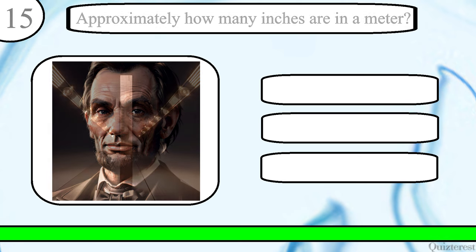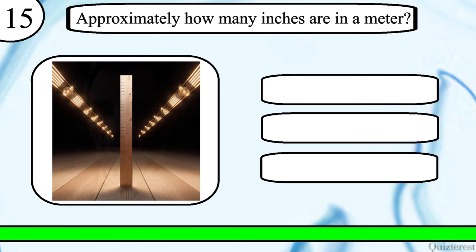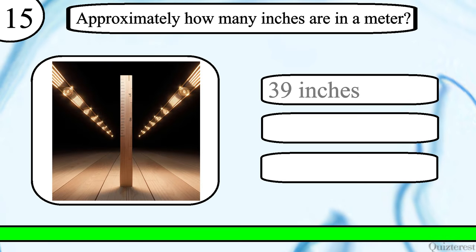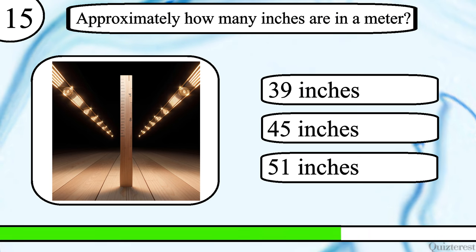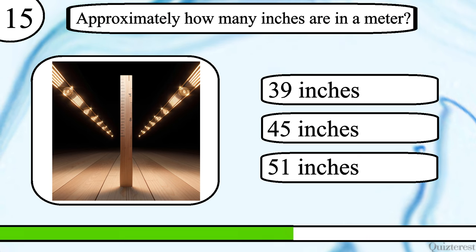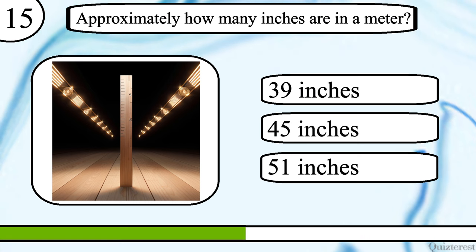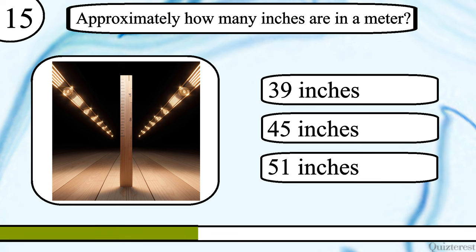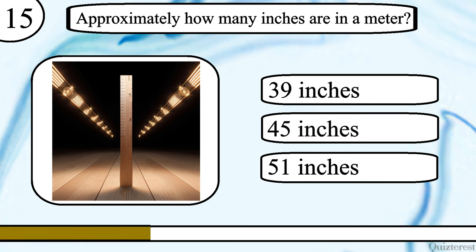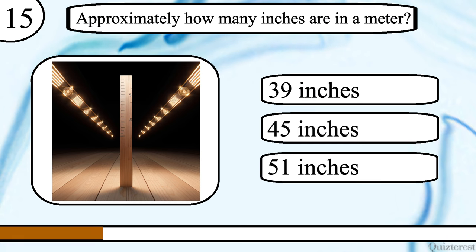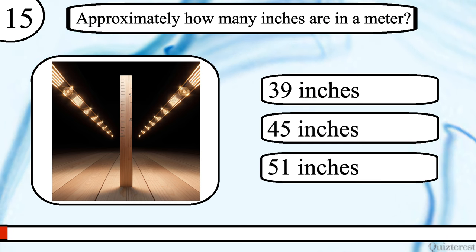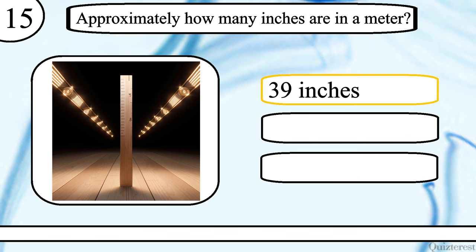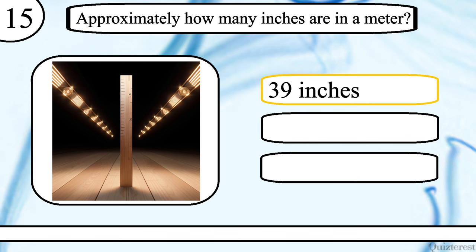Question 15. Approximately how many inches are in a meter? 39 inches, 45 inches, or 51 inches? The correct answer is 39 inches.